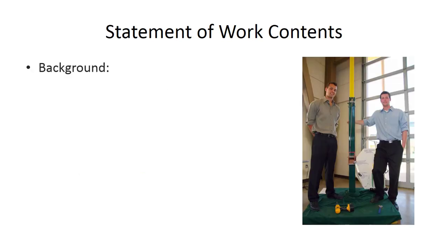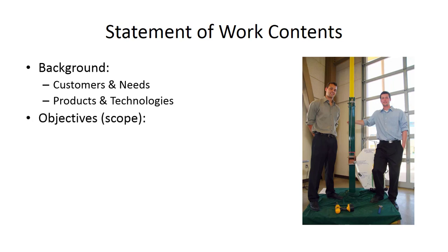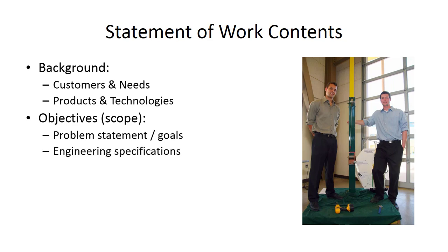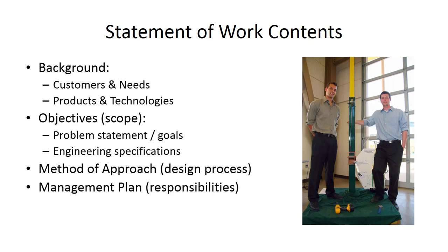Briefly, the statement of work contents include a background section covering customers and their needs, as well as products and technologies used to solve the need in the past and that you might use in the future. There's an objectives section defining scope via a problem statement and goals, plus engineering specifications you will test your final design against. There's a method of approach section describing the design process, a management plan defining major responsibilities and extra resources, and lastly appendices including references, a quality function deployment house of quality, and any other important additions.